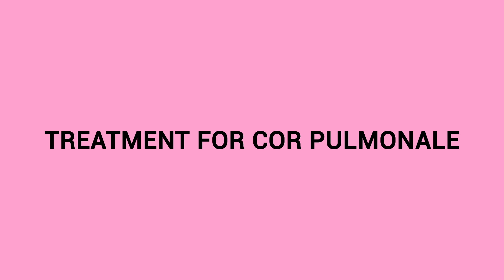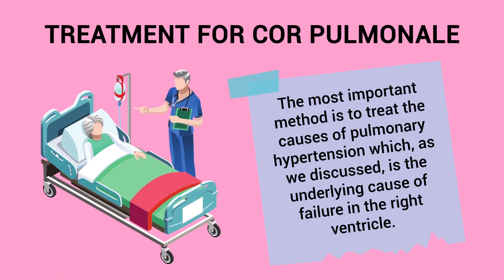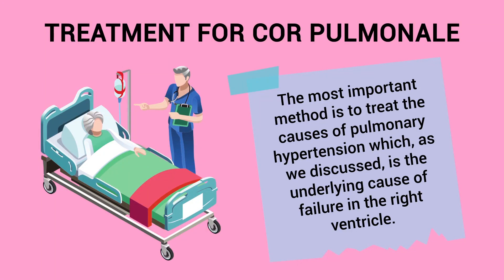The treatment for cor pulmonale depends on the signs and symptoms of the patient. The most important method is to treat the causes of pulmonary hypertension, which is the underlying cause of failure in the right ventricle.